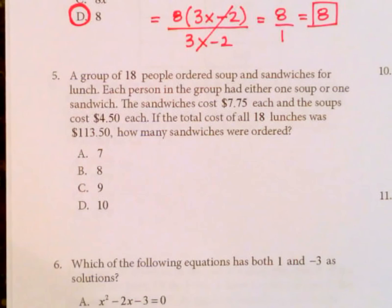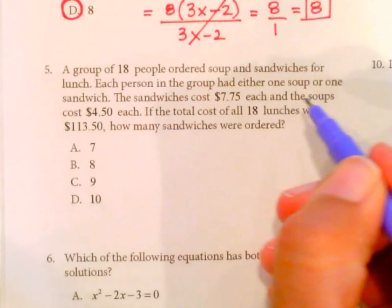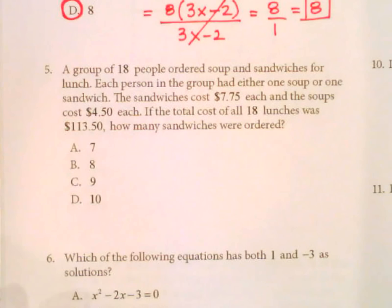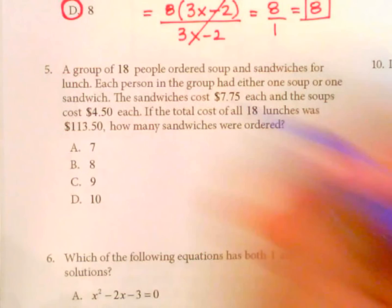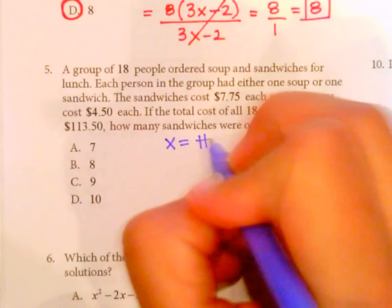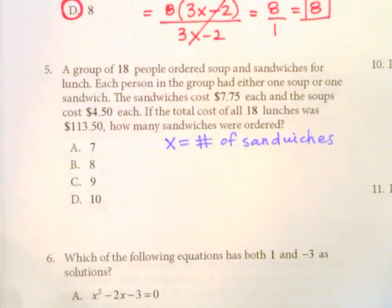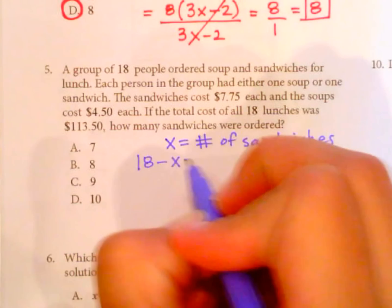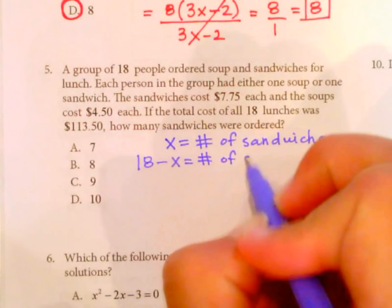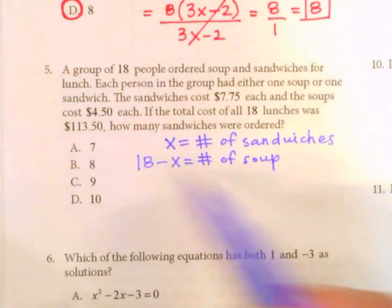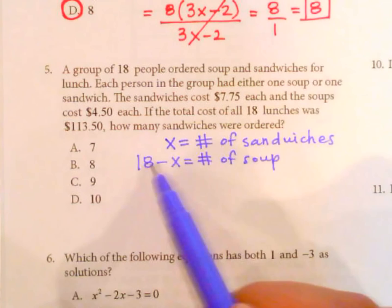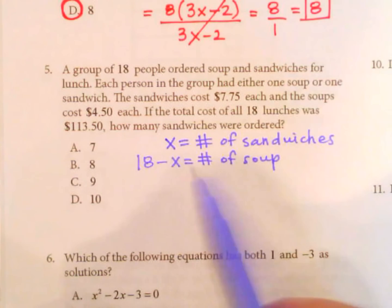Number 5. A group of 18 people ordered soup and sandwiches for lunch. Each person in the group had either one soup or one sandwich. Okay, so I'm going to call the number of sandwiches x. So this is number of sandwiches. And then 18 minus x is the number of soups because we know they got one or the other. So if there were, for example, if there were 10 sandwiches, then I can say 18 minus 10 will give me 8 soups. So combined, they have to equal 18 and there's no repeats.